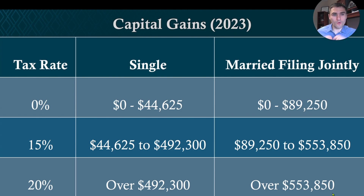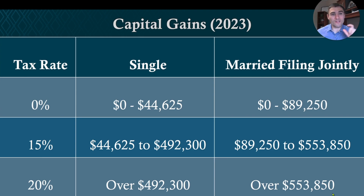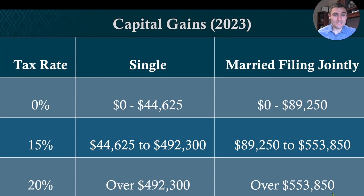I want to make sure you understand how capital gains work for planning purposes, so let me share a client example. We had a client who had Apple stock — he bought it for $20,000. That Apple stock grew to $120,000. So if he sells it, he has $100,000 of capital gains that he has to pay taxes on.